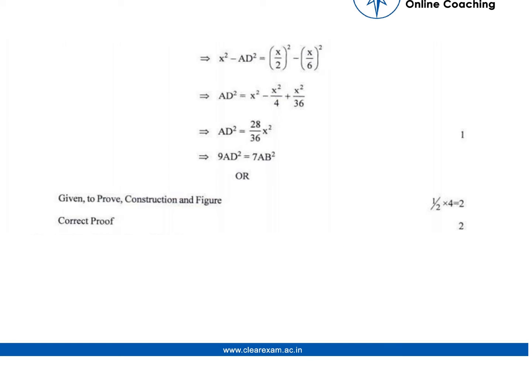Now we have AB² = x², and putting the other two values, BE = x/2 and DE = x/6, we get AD². So AD² comes out to be 28/36 x².